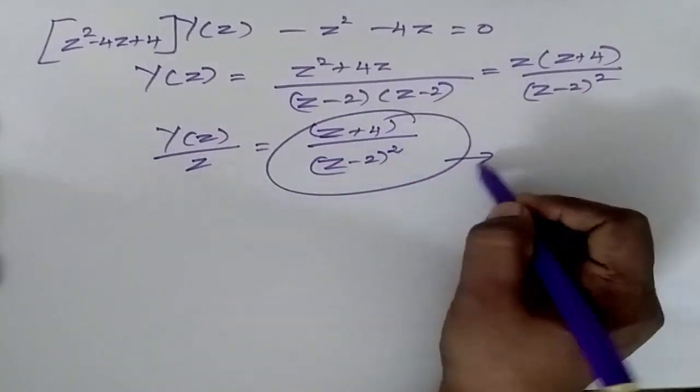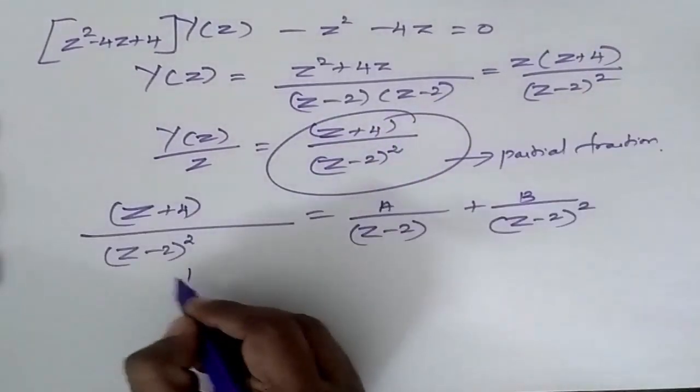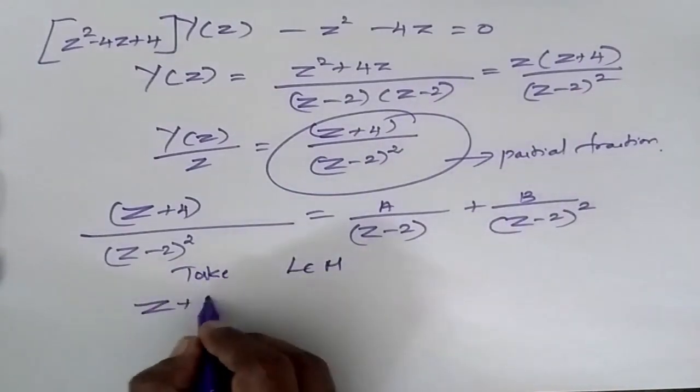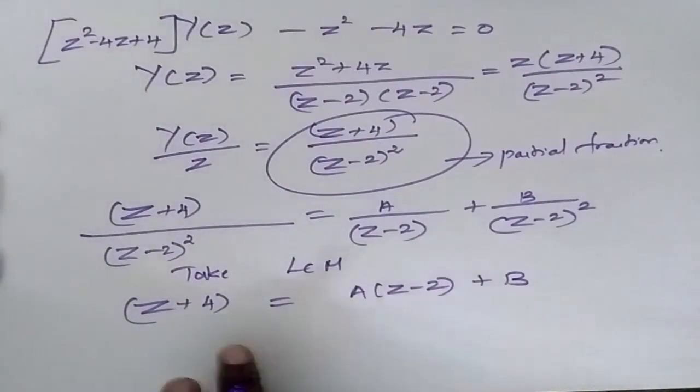Now I am going to apply partial fraction for this. Take LCM and simplify. I will be getting denominators will get cancelled.